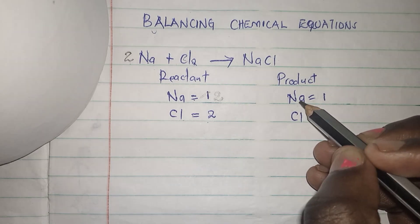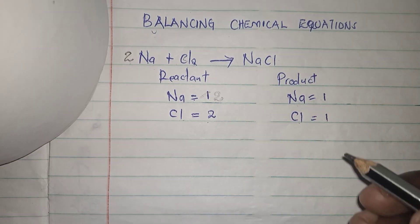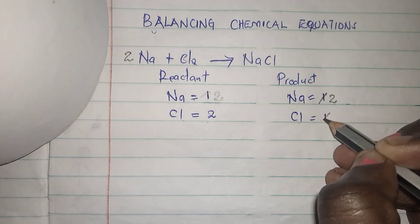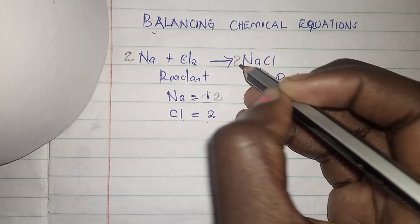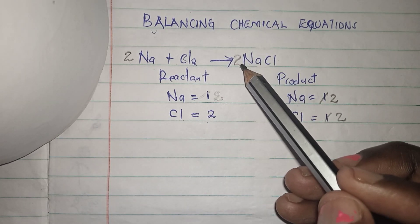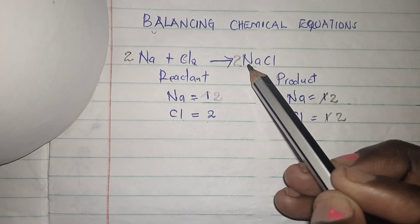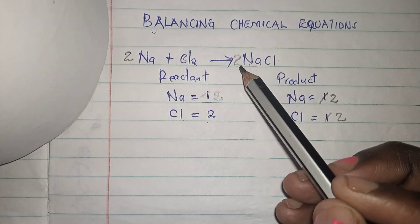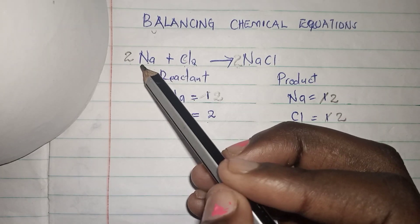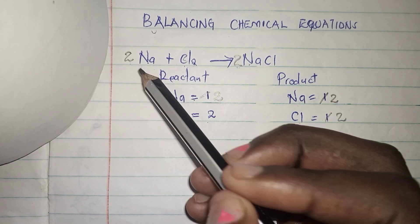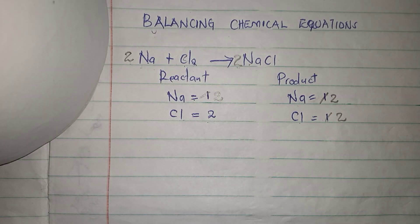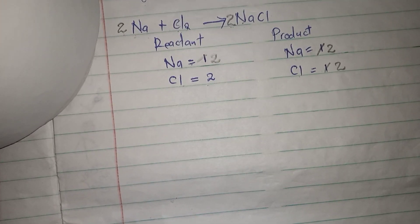On the product side I have one sodium and one chlorine, so I write a two before sodium chloride. When I write two before sodium chloride, the sodium atoms are two and the chlorine atoms are two. Chlorine is two on the reactant side and sodium atoms are two as well, so the equation is balanced. Let us look at another equation.